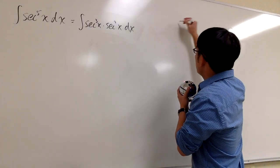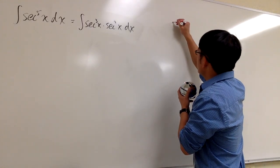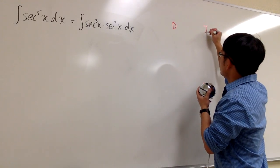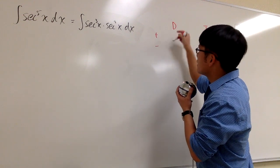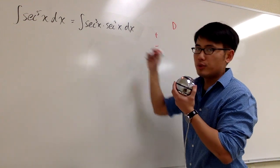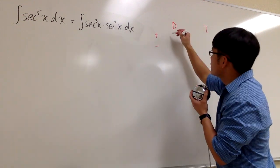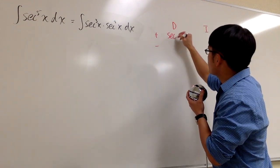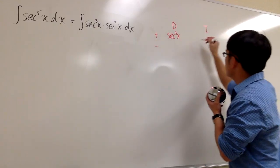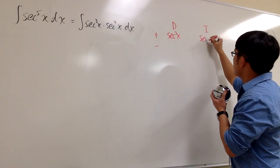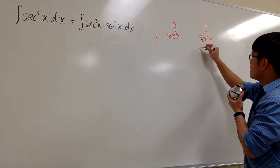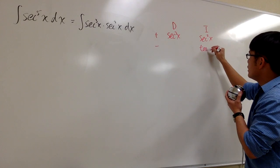To set this up, let me do it with the DI method. D on the right here, I on the right here, with a plus-minus sign. I want to differentiate secant to the third power, so let me put this down. I want to integrate secant to the second power. Integrating secant squared gives us tangent x.